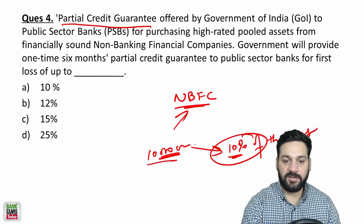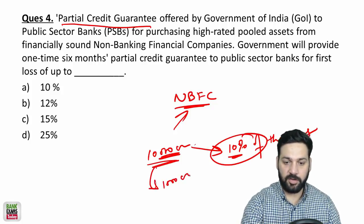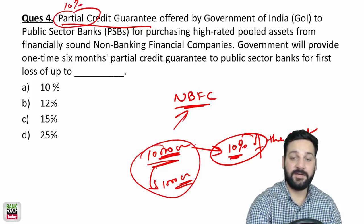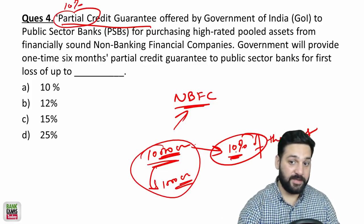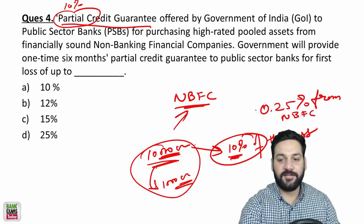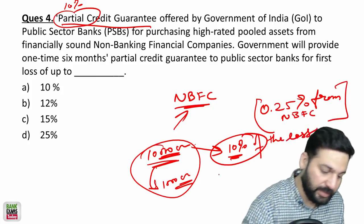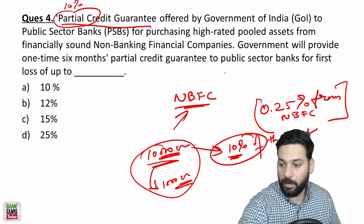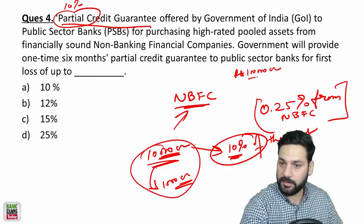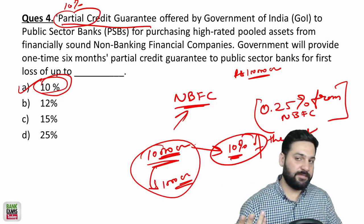So if the loan is 10,000 crore and goes NPA, the Government of India would cover 1,000 crore — that is 10%. That is why it is called a partial credit guarantee, because only 10% is covered. The Government of India is not doing this for free; it is charging 0.25% from NBFCs for providing this insurance service. Finance Minister Nirmala Sitharaman promised in the budget that cover would be provided for loans up to 1 lakh crore.